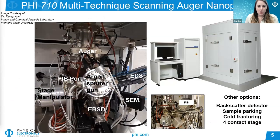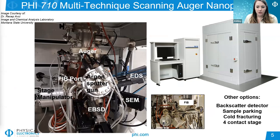At Physical Electronics, our latest model of Auger instrument is the 710 multi-technique scanning Auger Nano Probe. The instrument has an acoustic enclosure which serves as a vibration isolator. Inside, the main feature is the field emission electron source and Auger electron analyzer at the top. It points straight down, normal to the sample surface, and because we have the primary electrons and the analytical signal on the same axis, you can get true line-of-sight vision to the surface with no shadowing, making it ideal for highly topographical samples such as those made in 3D printing.